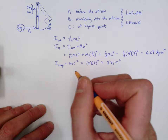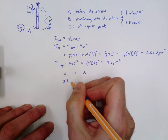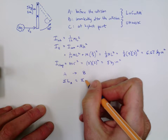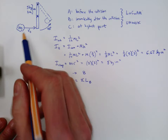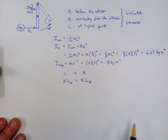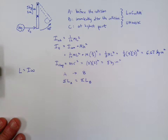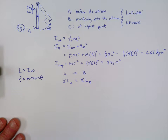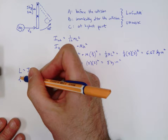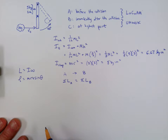Now let's apply conservation of angular momentum comparing locations A and B. The total angular momentum at A must equal the total angular momentum at B. There are two formulas: Iω for a spinning object, and mRv·sinθ for an object moving in a straight line. Both represent angular momentum — traditionally lowercase l is used for the straight-line case.